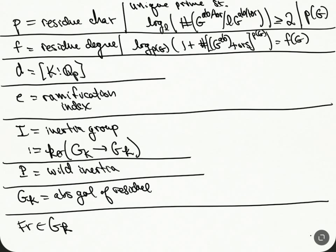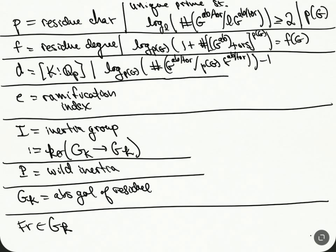The degree d of the extension is similar — we take the logarithm of the abelianization modulo torsion, modulo p of the torsion, then subtract one. We define this number to be D(G). This uses again the description of units for a local field, as explained in a previous video. Then E, the ramification index, is simply D(G) divided by F(G), and we define this to be E(G). So we've recovered all the information about the residue field and the degree of the extension.